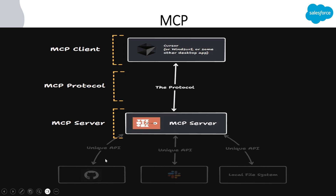From the MCP server, it has access to all the tools provided by GitHub, all the tools provided by Slack, all the tools provided by the local file system, or if connected to Salesforce, all the tools provided by Salesforce. Whenever a user asks anything to the AI agent — which is the host — it uses the MCP client, which goes to the MCP server and checks with that application what tools are available. Then, for a query like 'retrieve account records,' the MCP server knows which of the 10 to 15 tools from Salesforce to use.